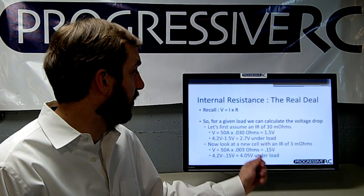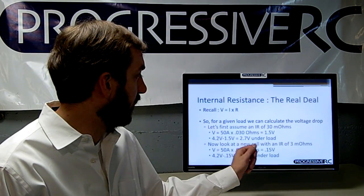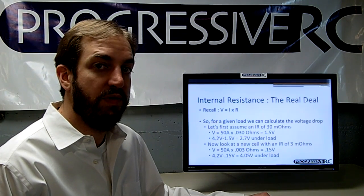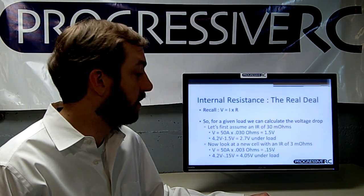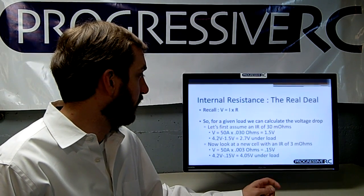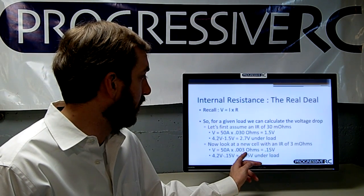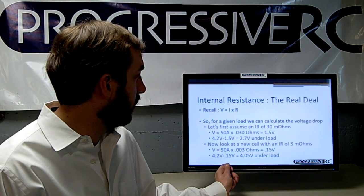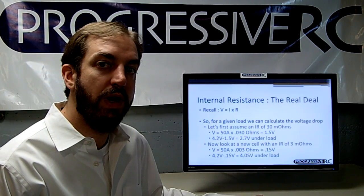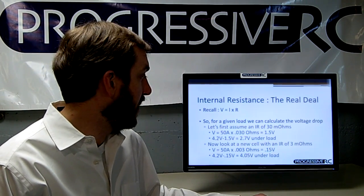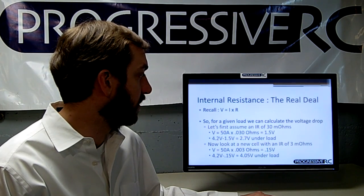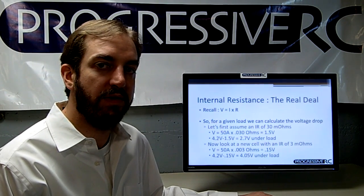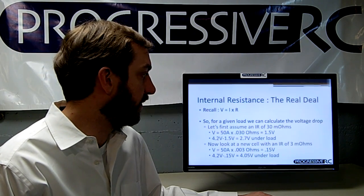So if the battery starts at 4.2 volts per cell — which is correct for a fully charged LiPo — and drops 1.5 volts, it'll be at 2.7 volts per cell under load. In the second battery with 3 milliohms, it would only drop 0.15 volts, so starting at 4.2 volts it drops to only 4.05 volts under load — remaining 1.35 volts higher. This represents significantly higher power output and available capacity on the battery with lower internal resistance.